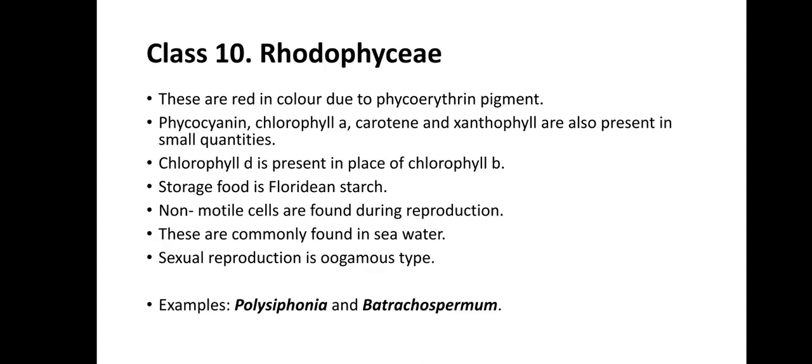Class 10 is Rhodophyceae — the red-colored algae. These are red-colored due to the presence of phycoerythrin. Phycocyanin, chlorophyll A, carotene, and xanthophylls are also present. Chlorophyll D is present in place of chlorophyll B. Storage food material is floridian starch. Non-motile cells are found during reproduction. They are commonly found in marine habitat. Sexual reproduction is oogamous type. For example, Polysiphonia and Batrachospermum.